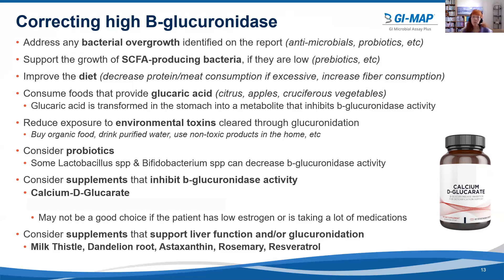Be sure to reduce exposure to environmental toxins cleared through glucuronidation — make sure the patient is buying organic food, drinking purified water, and using non-toxic products in their home. Supplement-wise, consider probiotics, because some Lactobacillus species and Bifidobacterium species can decrease beta-glucuronidase activity.